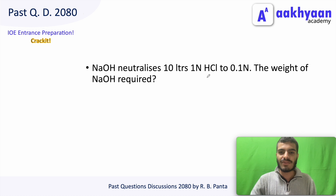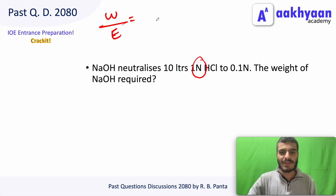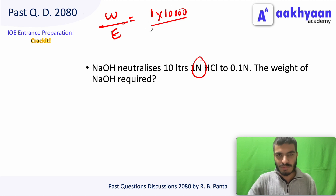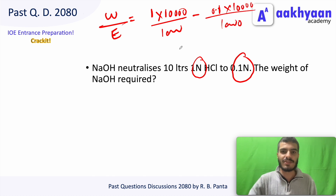NaOH neutralizes 10N of 1N solution to 0.1N. Weight of NaOH liquid / equivalent weight equals normality × volume relationship: N1V1 = N2V2. Volume = 10L = 10,000 mL, N2 = 0.1, solving for the weight. Equivalent weight of NaOH = 40.